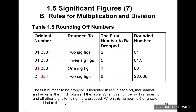For 27,654 rounded to 2 sig figs, counting from the left we keep the 2 and the 7. What comes after the 7 is a 6, so we round the 7 up to an 8. Since the 7 was in the thousands place, we need three zeros as placeholders to show the 8 is in the thousands place. The answer is 28,000 to two sig figs.